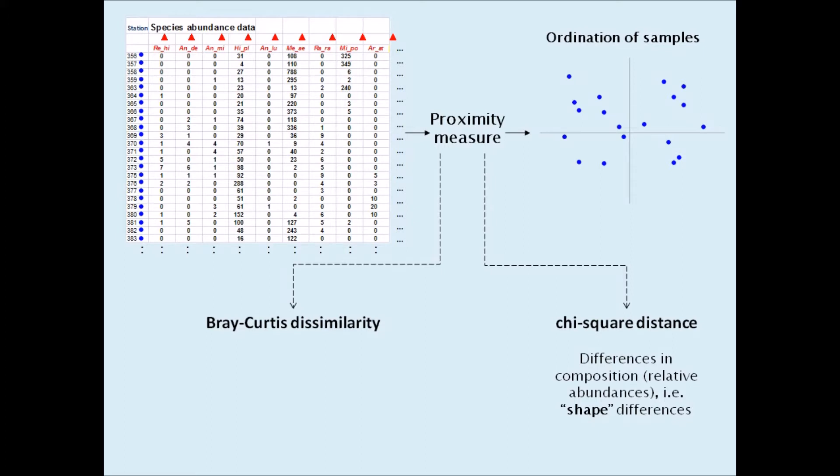When it comes to the Bray-Curtis dissimilarity, however, I have always wondered what this proximity measure actually quantifies. Does it measure just shape differences, or does it include some information about the size differences between samples as well? Some authors say that it measures difference in species composition, but what does this really mean?